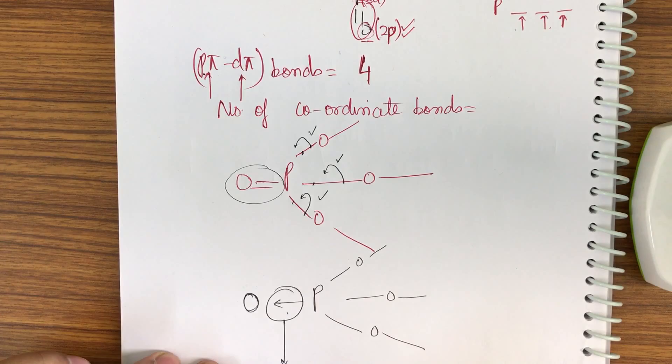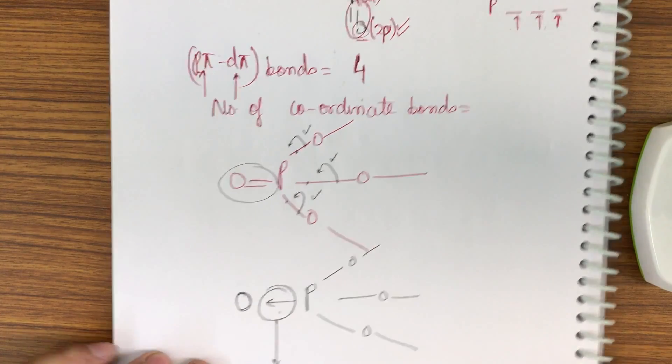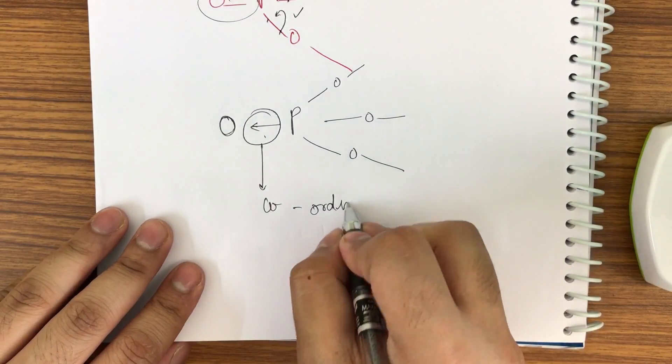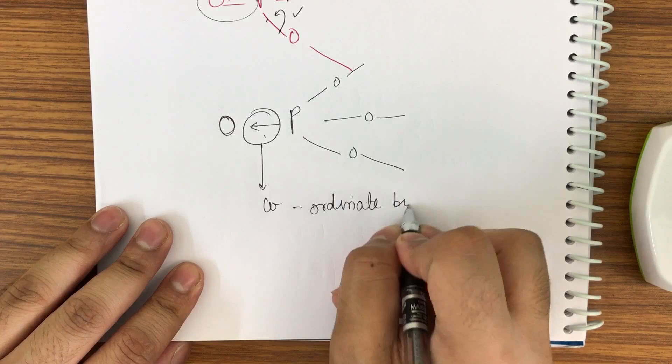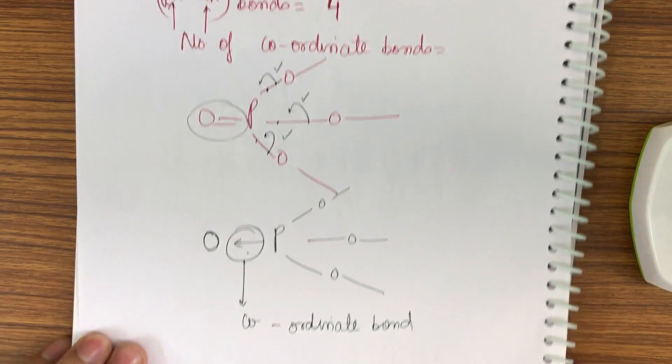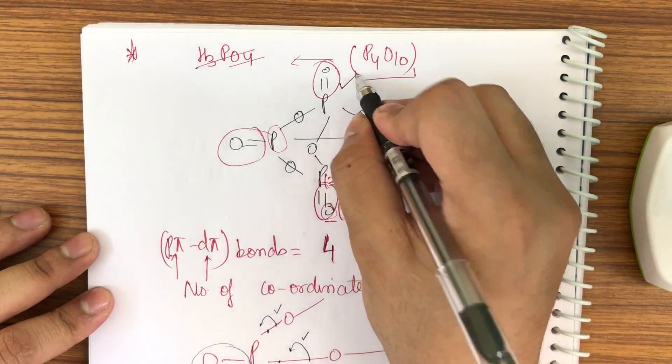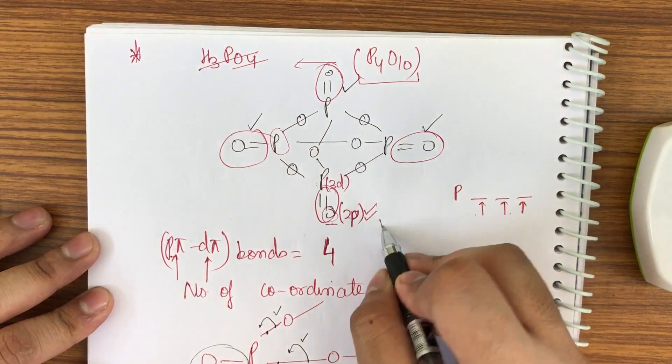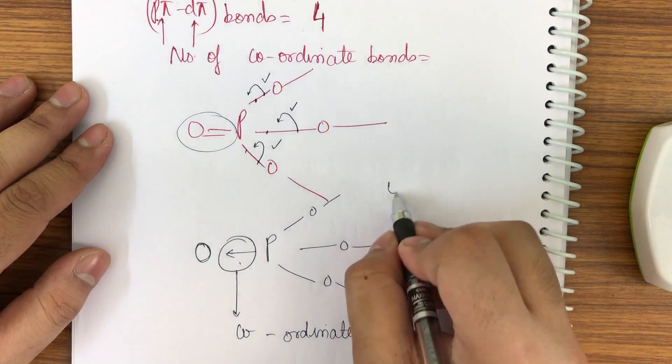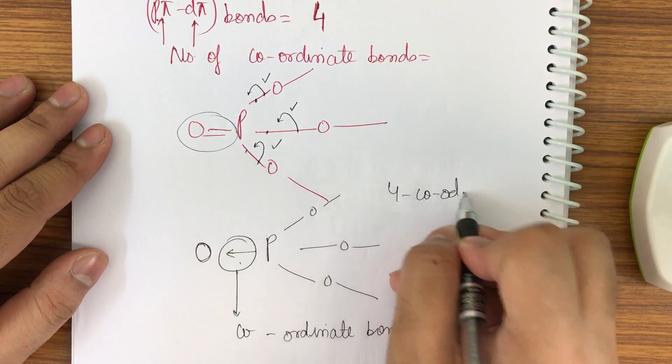So now this bond is extra, we can say. So now this will form a coordinate bond, so actual representation for this bond will be this. So this bond is known as a coordinate bond. So how many coordinate bonds I will be getting in P4O10? 1, 2, 3, 4 - so I will get 4 coordinate bonds.